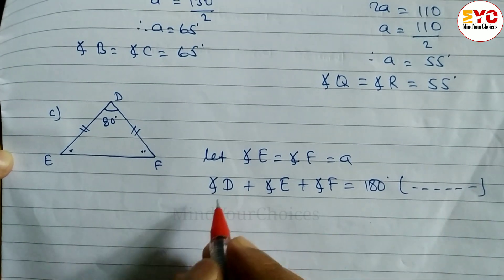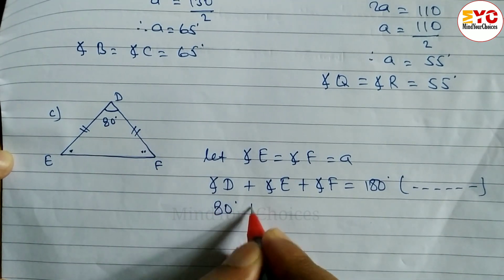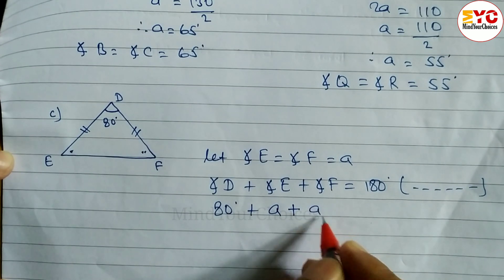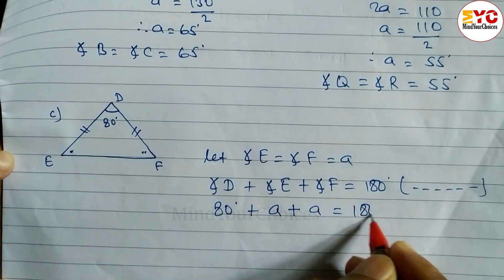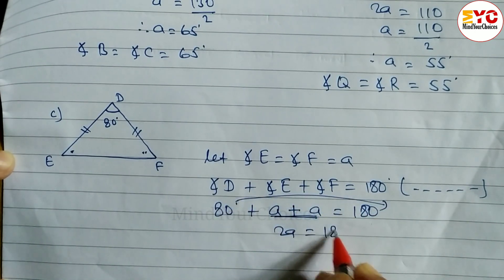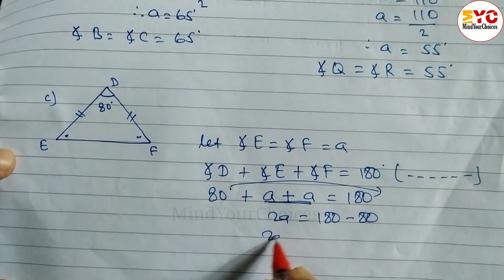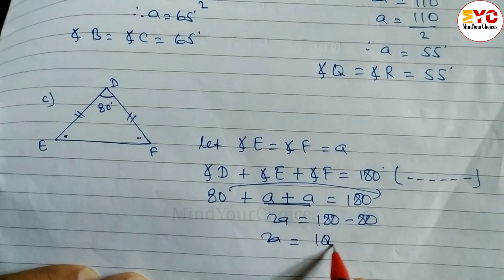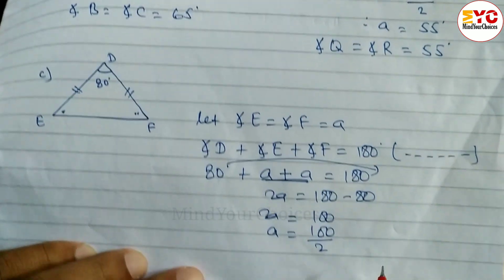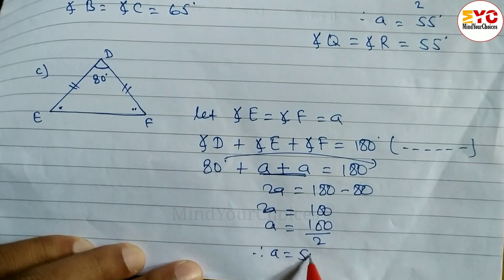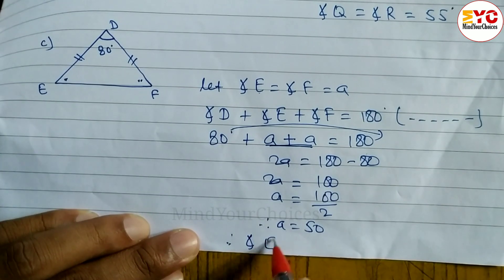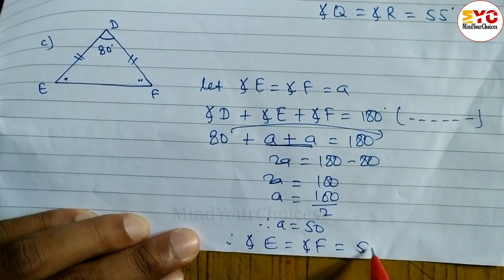Reason: the sum of angles of a triangle. Angle D is equal to 80 degrees. So we write 80 plus angle E, which is A, plus angle F, which is A, is equal to 180 degrees. A plus A gives 2A. This 80 we take to the right side: 2A is equal to 180 minus 80, which gives 100. Divide 100 by 2. Therefore the value of A is equal to 50. We let angle E and angle F equal to A. So angle E is equal to angle F is equal to 50 degrees.